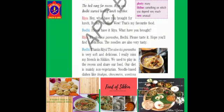The bell rang for recess. Rhea and Bodhi started having lunch together. Rhea: Hey, what have you brought for lunch? Bodhi: Noodles. Rhea: Wow, that's my favorite food! Bodhi: Please have it Rhea. What have you brought? Rhea: It's aloo ka paratha. Bodhi: Please taste it. Hope you'll find it delicious. The noodles are also very tasty. Bodhi: Thanks Rhea. The aloo ka paratha is very soft and delicious. I really miss my friends in Sikkim. We used to play in recess and share our food. Our diet is mainly non-vegetarian. Noodle-based dishes like thukpa, chowmein, wontons and fakhtu are common in Sikkim.